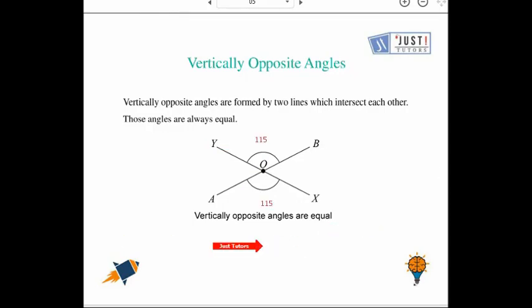So if we think that angle YOB was 115 degrees, then angle AOX is 115 degrees because these are vertically opposite angles and that's why they are both equal.